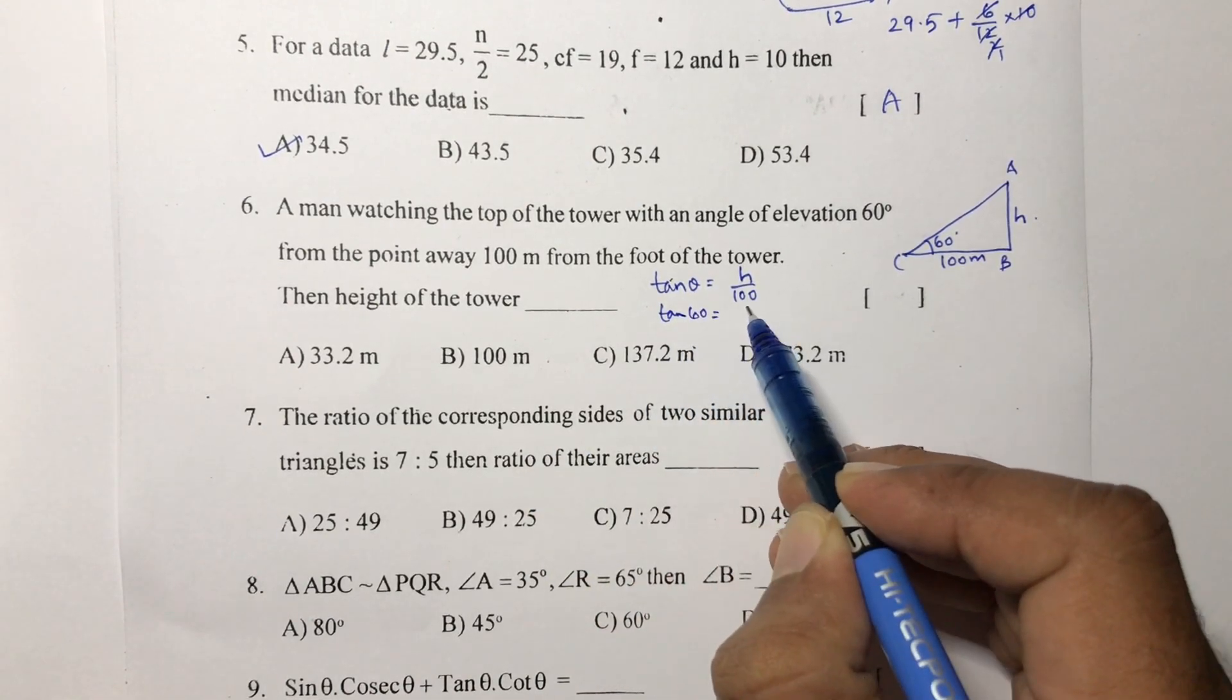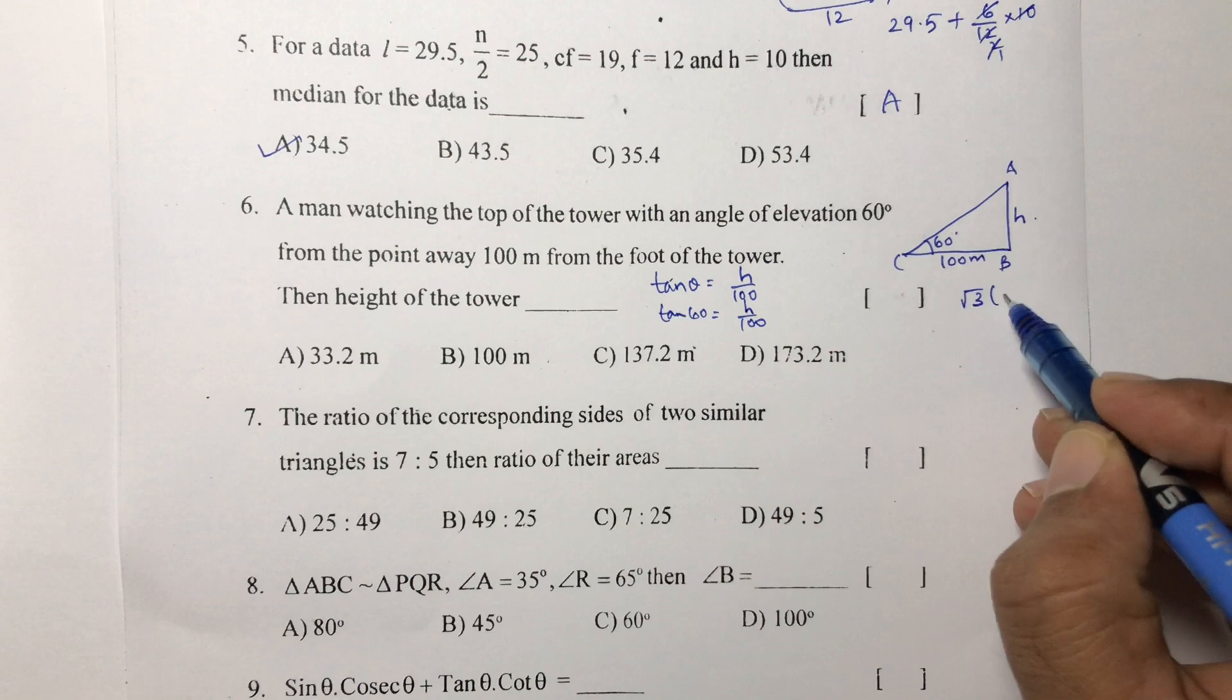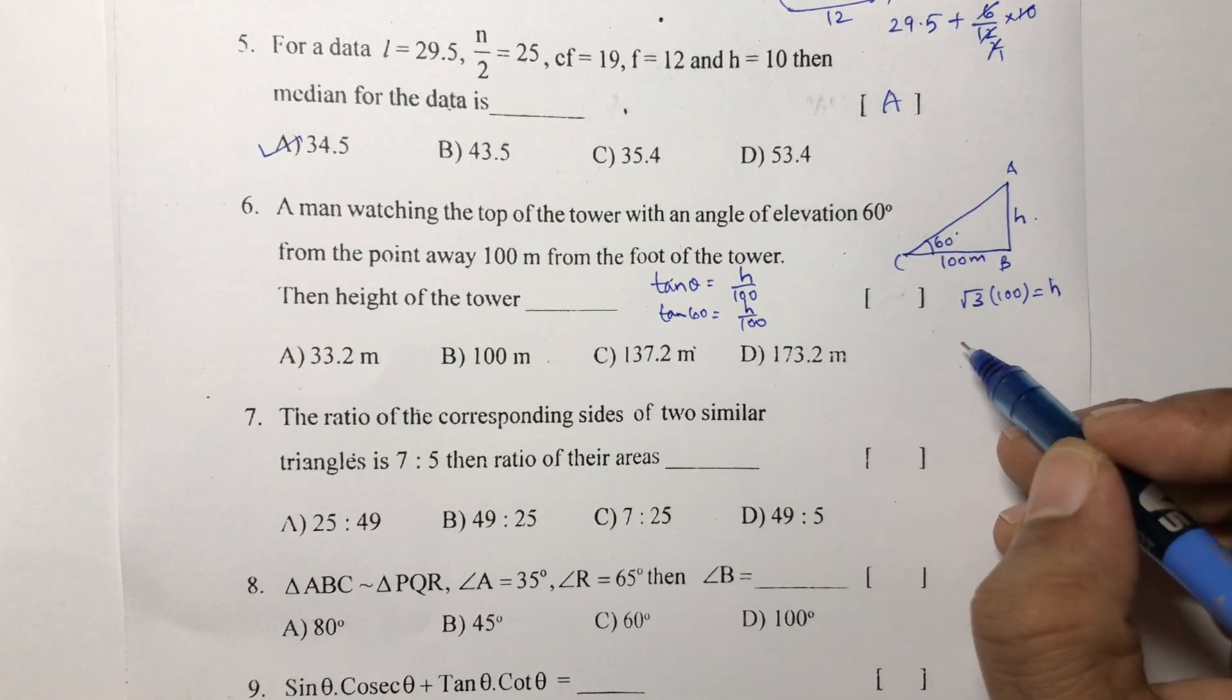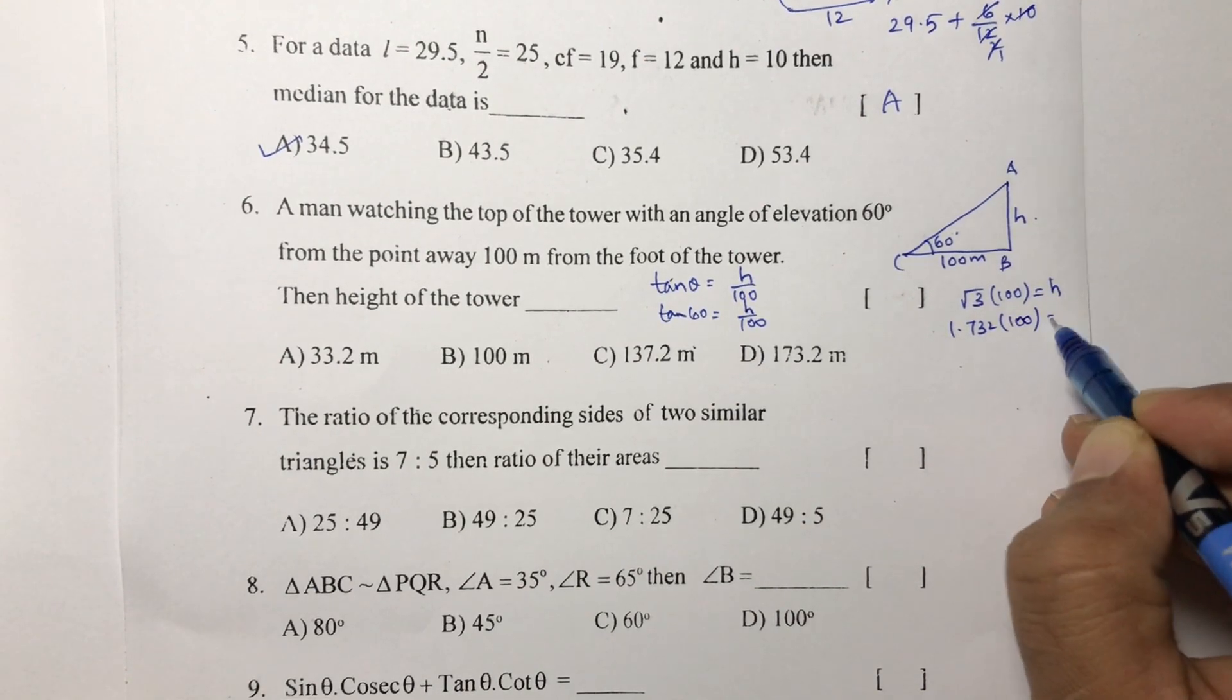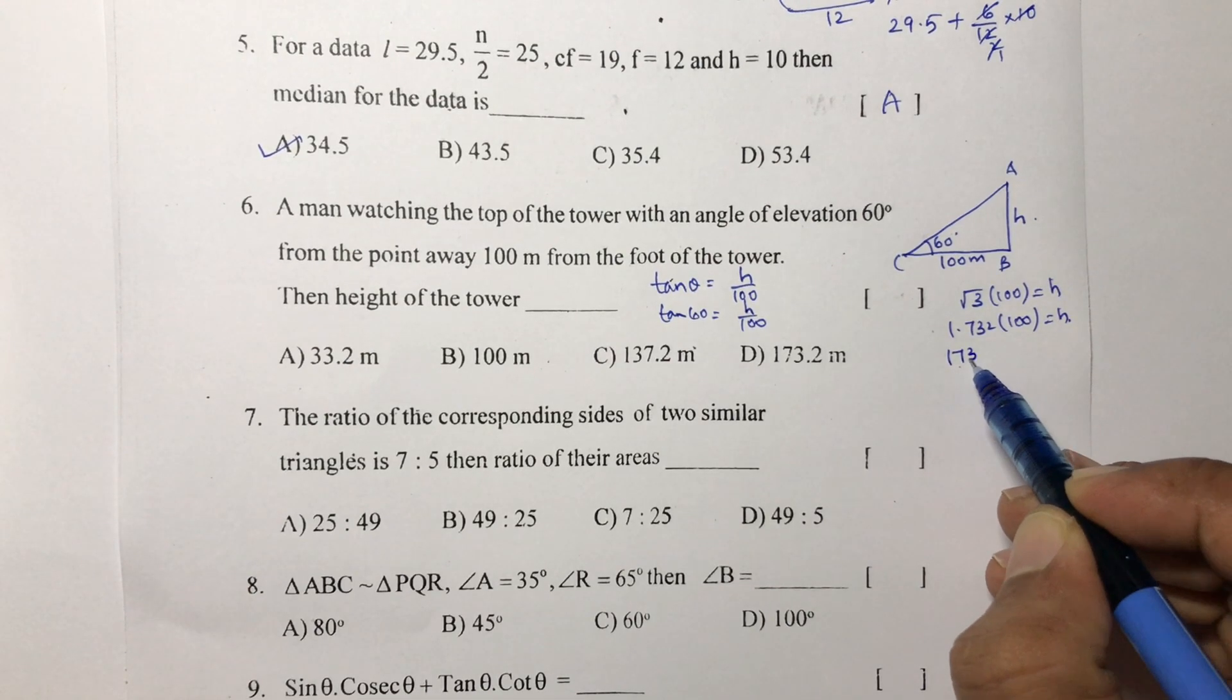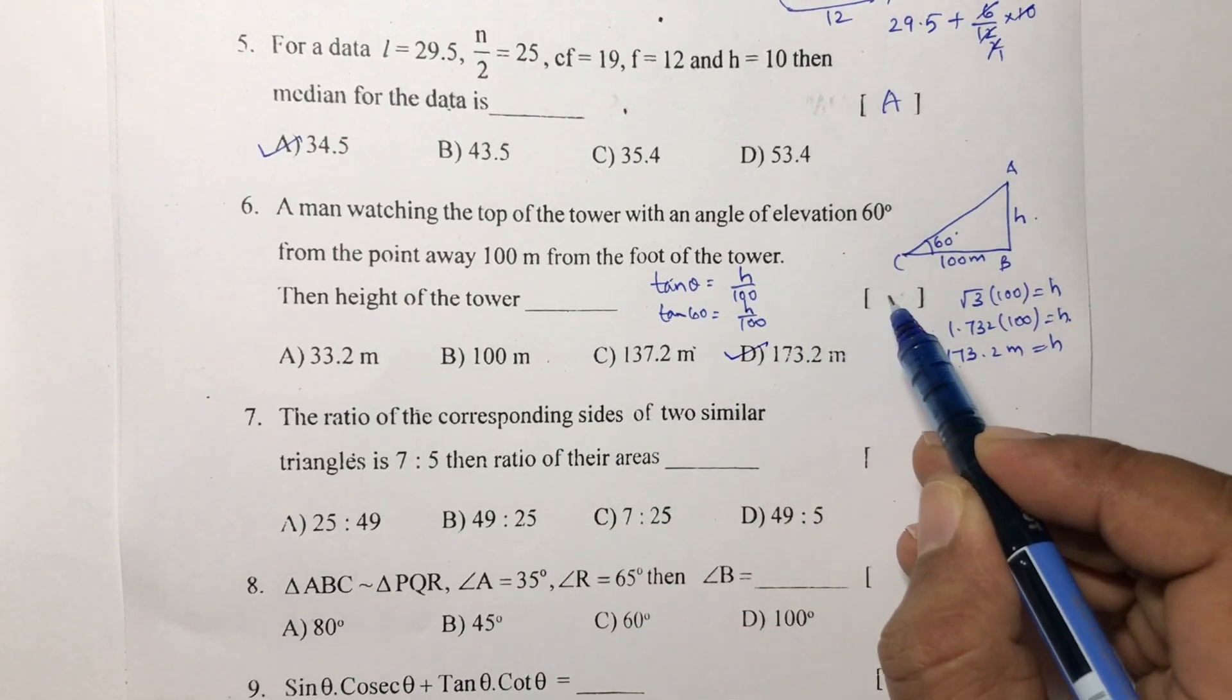Tan 60 is h by 100. Tan 60 value is root 3. If I cross multiply, root 3 into 100 equals h. If I multiply this, 173.2 meters. The height of the tower is 173.2 meters. Correct option is D.